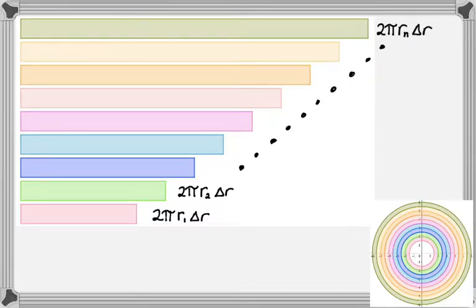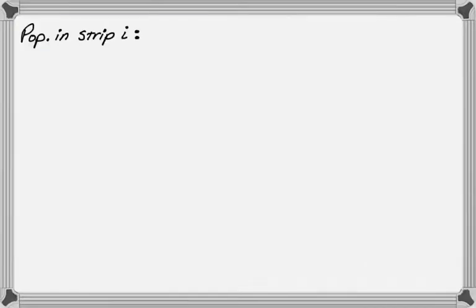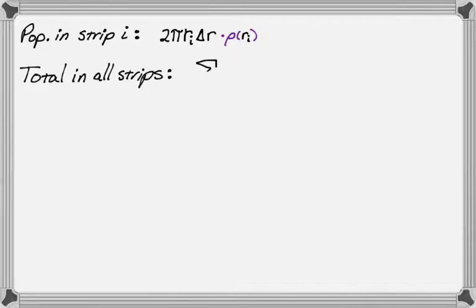Now we want to find the population in each of these strips. To do that, we're going to do the area of the strip and multiply by the population density. Population in strip i is the area of strip i, so 2 pi R sub i delta R, times rho of R sub i. That's only in one strip, so we want to add up all the strips. That's a summation.